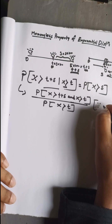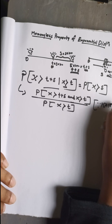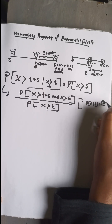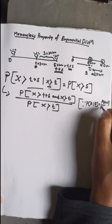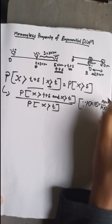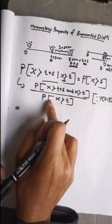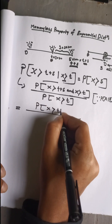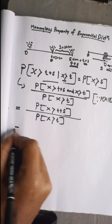This follows from the conditional probability formula: P(A|B) = P(A ∩ B) / P(B). From that, the numerator simplifies because if x is greater than t plus s, it is automatically greater than t. So the numerator becomes simply the probability of x greater than t plus s, divided by the probability of x greater than t.